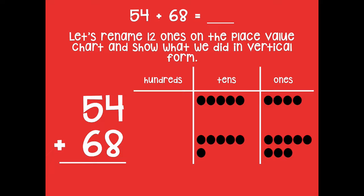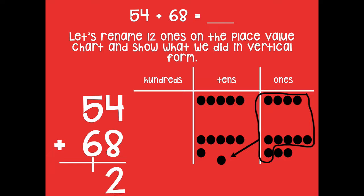Let's rename the twelve ones in the ones place on the place value chart and show what we did in vertical form. I'm going to make those ten ones into a ten, so now I have one ten and two ones.